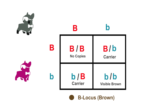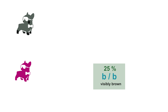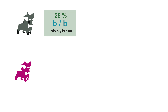Each square in this instance represents a 25% chance, so we'll have a 25% chance of a brown dog, a 50% chance of having carriers, and a 25% chance of having no copies at all. Since we're after an Isabella, we'll make note of that 25% chance we need for that to occur.